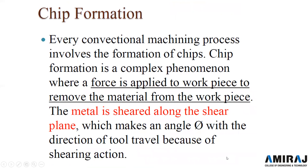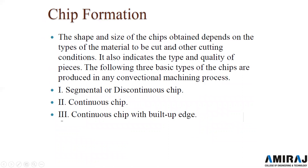Every conventional machining process involves the formation of chips. Chip formation is a complex phenomenon where force is applied to the workpiece to remove material, and the metal is sheared along the shear plane which makes an angle φ with the direction of tool travel. The shape and size of chips depends upon the type of material being cut and other cutting conditions, and also indicates the quality of the machined surface.